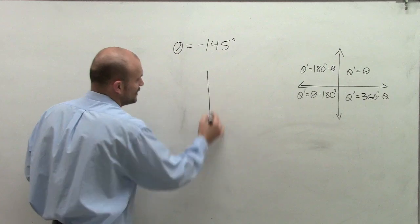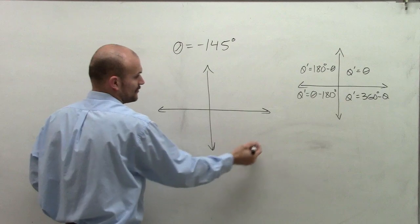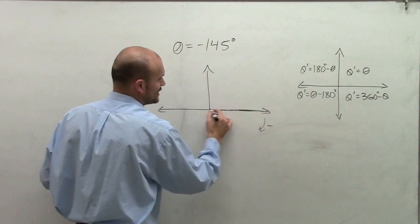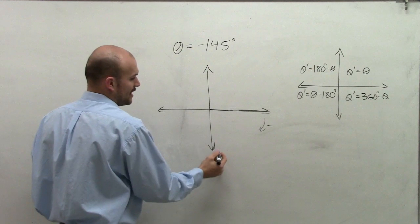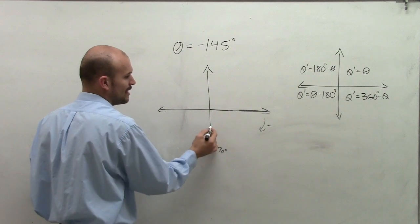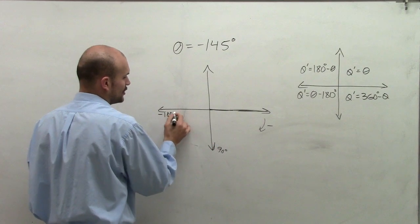And the first thing we need to do is sketch our angle in standard position. So I notice that this is a negative angle. Therefore, it's going to go in the negative direction. So in standard form, I'm going to have my initial side start here. And if I was going to go around here, first to my y-axis would be 90 degrees, and here it's going to be negative 180 degrees.